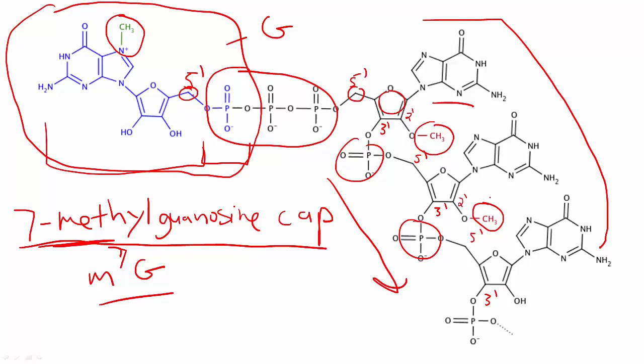Now, don't worry about the exact mechanism of all of this, of how this all goes down. Because I just want you to understand the big picture for now. One last thing I want to mention is that the capping process occurs co-transcriptionally, which means it happens during transcription. Because usually, as soon as the 5' end emerges during the transcription process, the whole entire capping process begins.